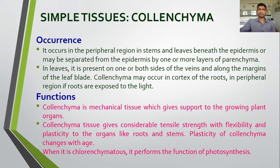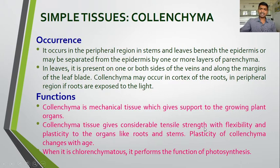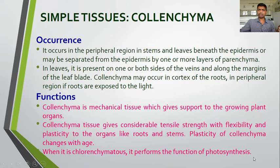The main function of collenchyma is to give mechanical support. It is a mechanical tissue that gives mechanical support to the growing plant organs. Collenchyma tissue gives considerable tensile strength with flexibility and plasticity to organs like roots and stem. It possesses high water content because of which the cells are flexible with plasticity. The plasticity of collenchyma changes with age. When it is chlorenchymous it performs the function of photosynthesis, because when collenchyma consists of chloroplast and chlorophyll pigments, we call it chlorenchyma.